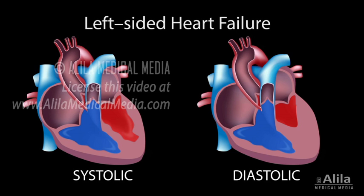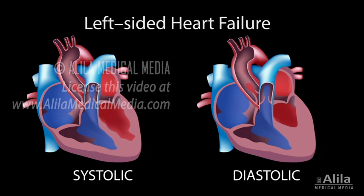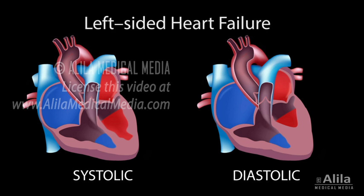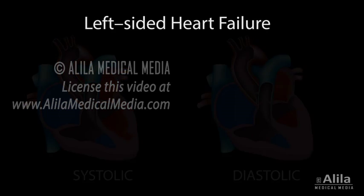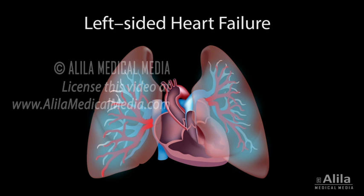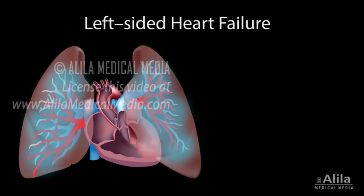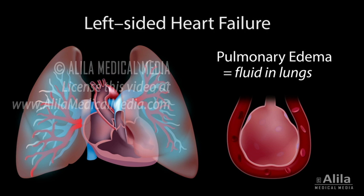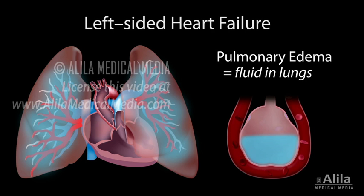Regardless of being systolic or diastolic in nature, left-sided heart failures share a common outcome: less blood pumped out from the heart. As a result, blood flows back to the lungs where it came from, causing congestion and increased pulmonary pressure. Fluid leaks from the blood vessels into the lung tissue, resulting in pulmonary edema, a hallmark of left-sided heart failure. Accumulation of fluid in the alveoli impedes gas exchange, resulting in respiratory symptoms such as shortness of breath, which worsens when lying down, and chest crackles.